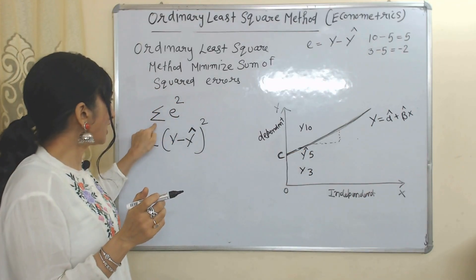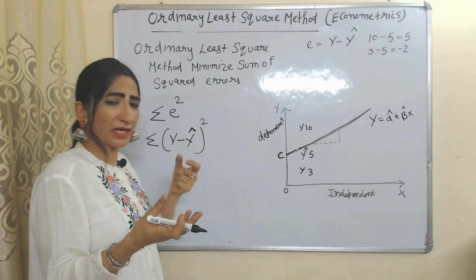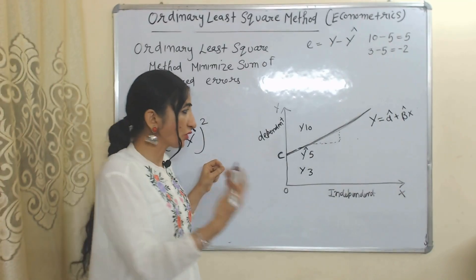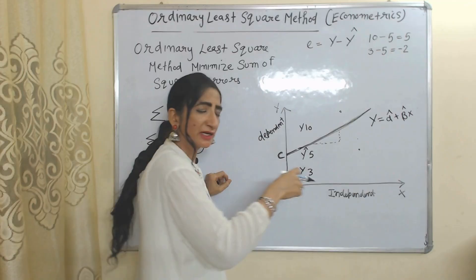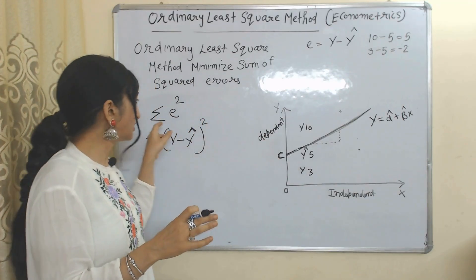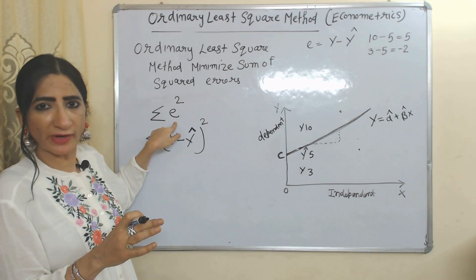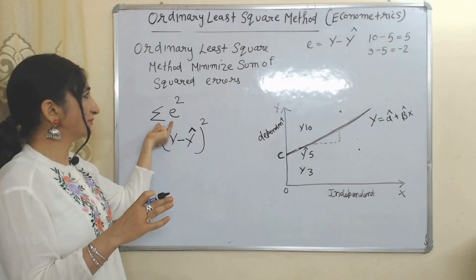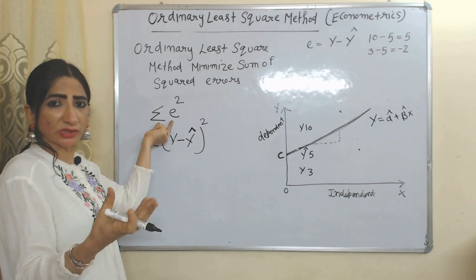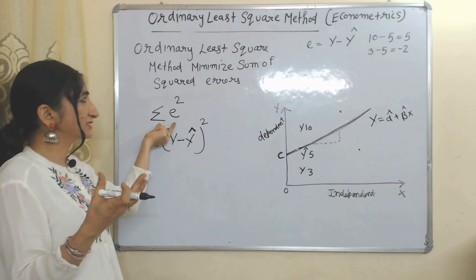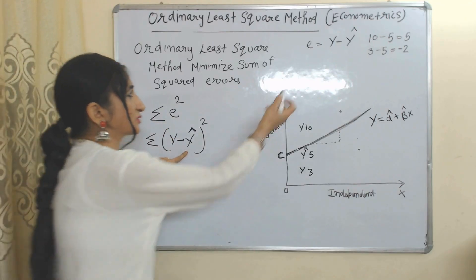But why do we have a summation sign? Why do we sum the errors? Because we don't have only one error — we have many errors. Some errors lie in one place, some in another. That's why we add all these errors together, which gives us the summation of squared errors. Ordinary Least Squares method minimizes this sum of squared errors, where errors equal Y minus Y-hat.